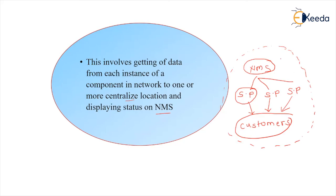One NMS belongs to one network and can contain information only about all the devices present inside that network. If there is another network, this NMS cannot have any status of that other network — there will be another manager to control it. Indirectly, NMS is controlling and storing the information and data. IT managers and software engineers who design and develop this NMS have all authority to observe, control, monitor, and solve problems present inside the network.